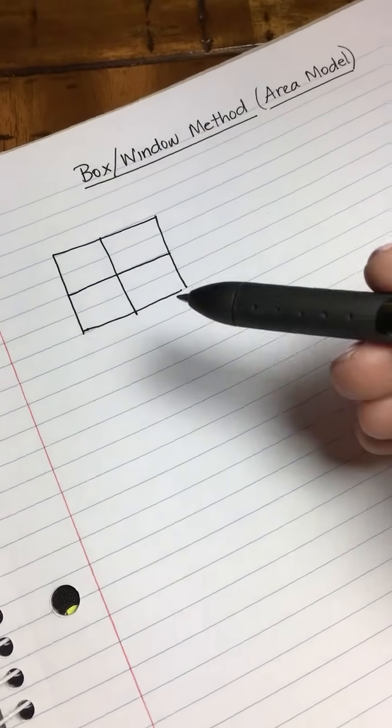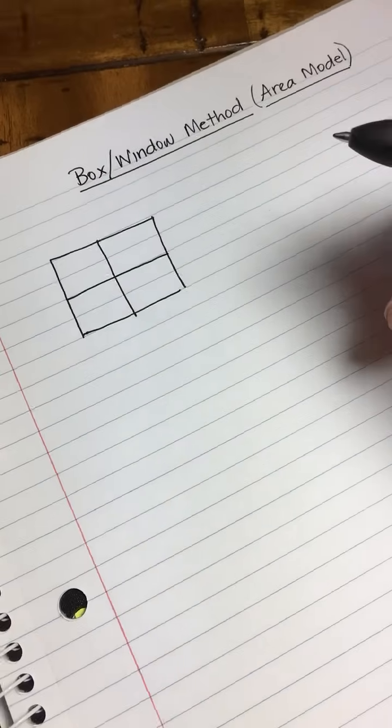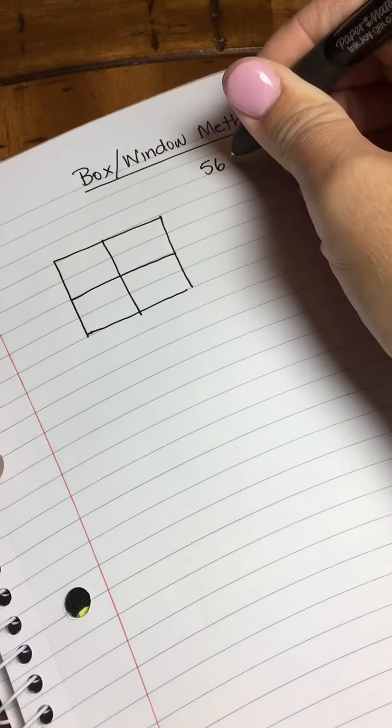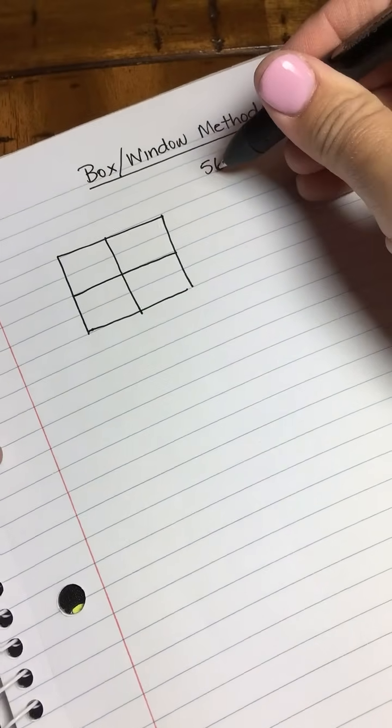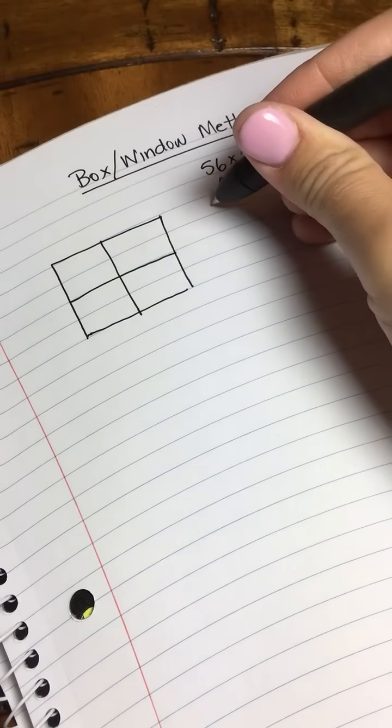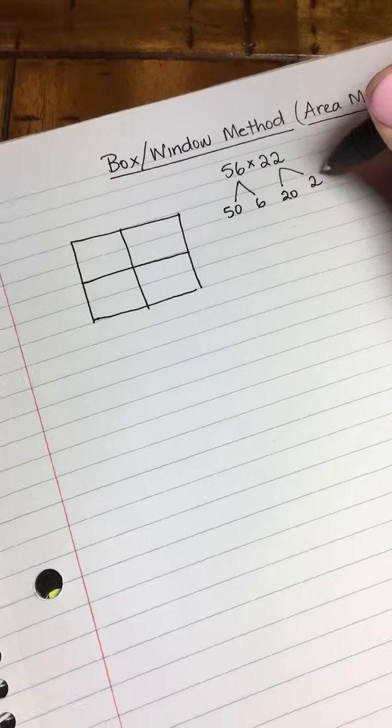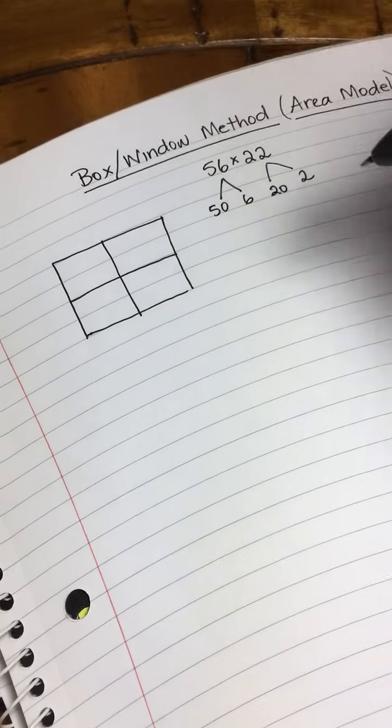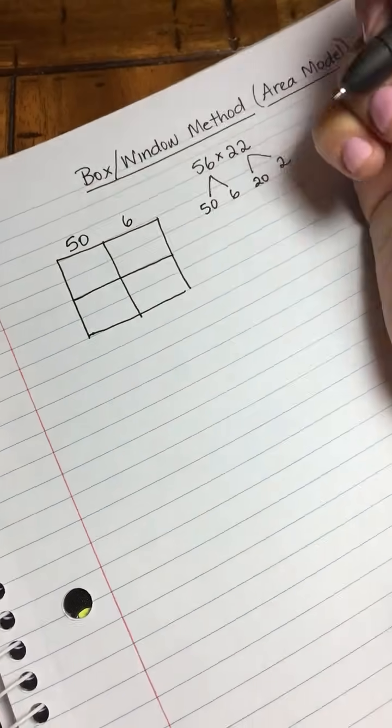Let's get right into it and figure out how to do the box or window method. This box or window that I've drawn is for a two-digit by two-digit multiplication equation. Suppose we want to solve 56 times 22. First, we need to break these factors up into their expanded forms. So 56 is actually 50 and 6, and 22 is actually 20 and 2.